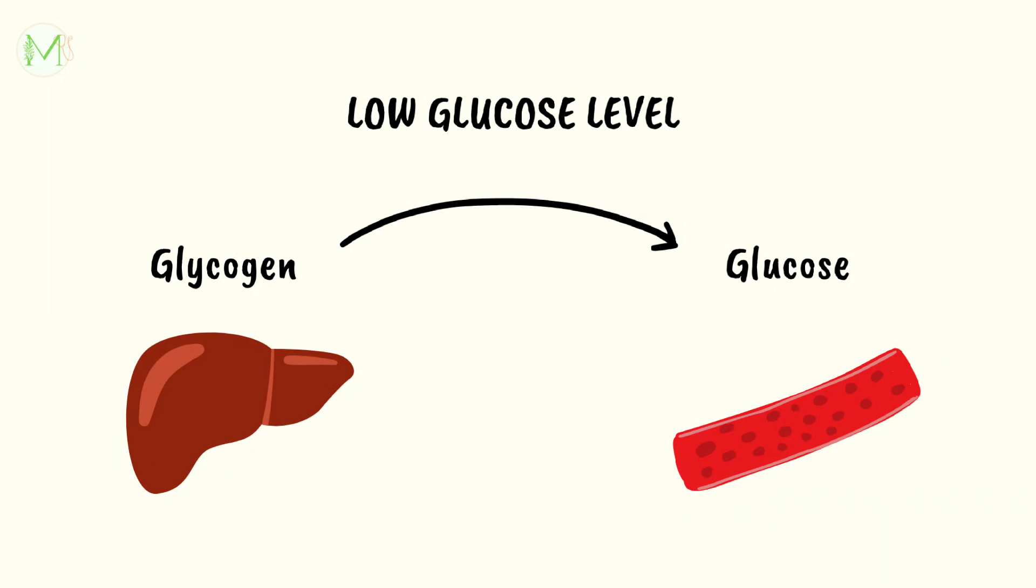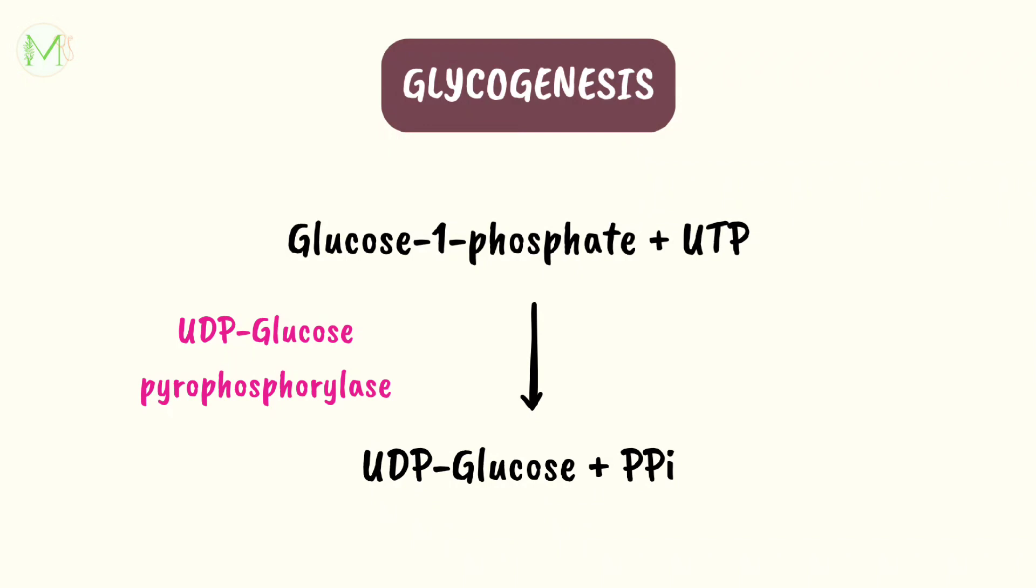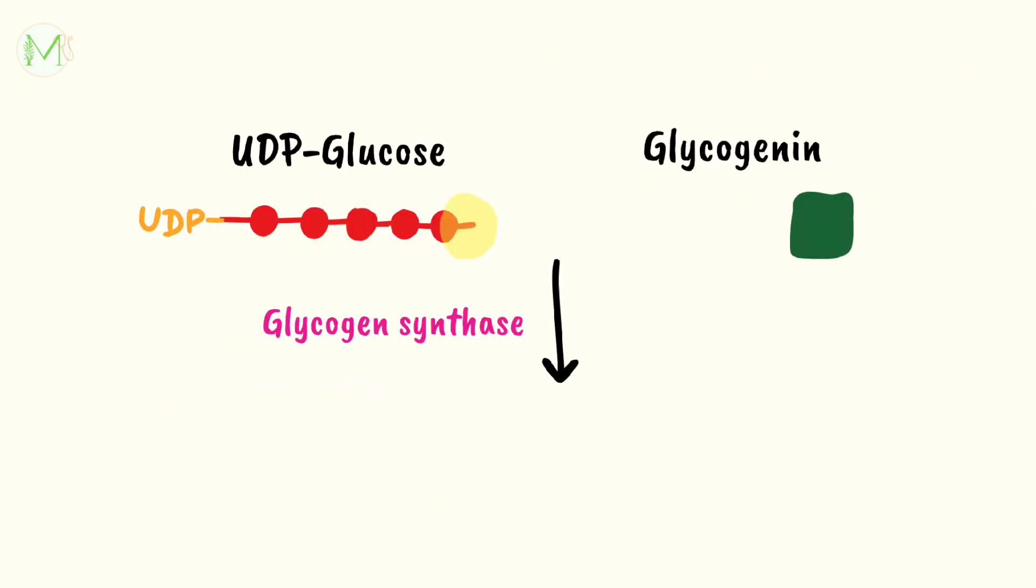Now, let's see how glycogen is synthesized. In step 1, glucose gets activated. Glucose 1-phosphate along with UTP, which is uridine triphosphate, in presence of UDP-glucose pyrophosphorylase enzyme gets converted into UDP-glucose.